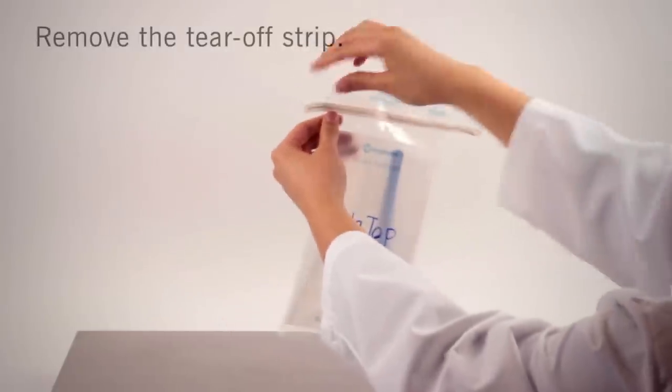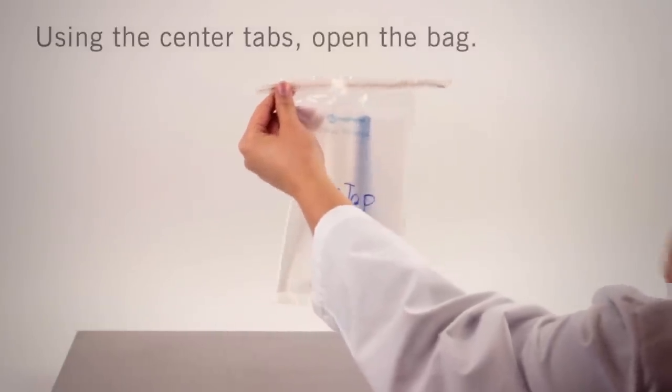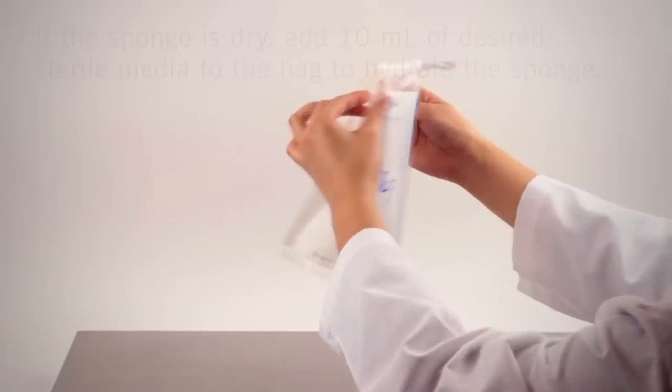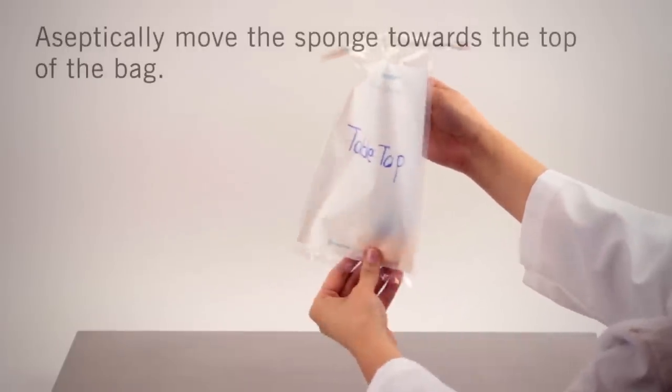Remove the tear-off strip. If stick sponge is ordered dry, add 10 milliliters of desired sterile media to the bag to hydrate the sponge. Hold the outside of the bag and guide the handle to the top of the bag.